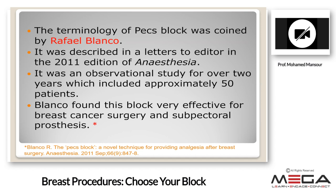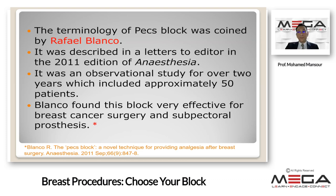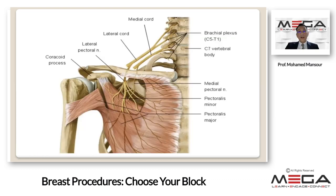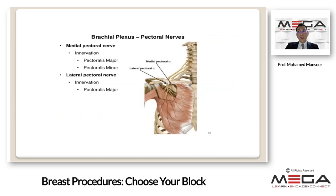Blanco found this block very effective for breast cancer surgery and subpectoral procedures. Local anesthesia is injected between pectoralis major and minor at the third rib level to block the lateral and medial pectoral nerves. This is the PECS-1 block. The indications for PECS-1 include surgery involving the pectoralis major muscle, like breast expanders, traumatic chest injuries, port-cath insertion, or pacemaker insertion.